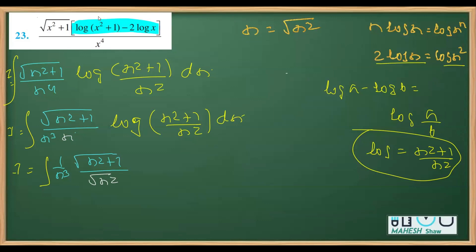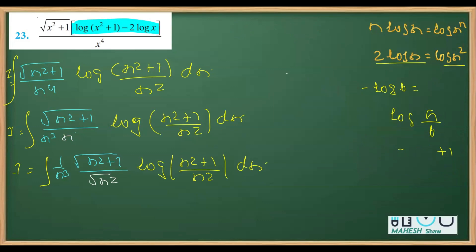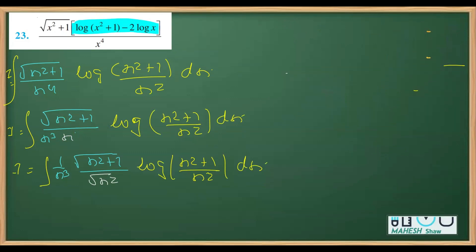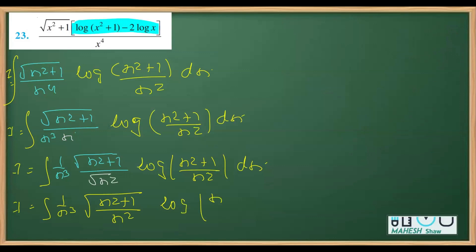The reason for replacing x with √(x²) is explained here. Continuing, this becomes log mod of (x² + 1) over x², whole integration dx. What you can observe is that I can write 1 over x³ times √(x² + 1 over √(x²)), and the expression inside the root and inside the log modulus are now framed as the same expression.